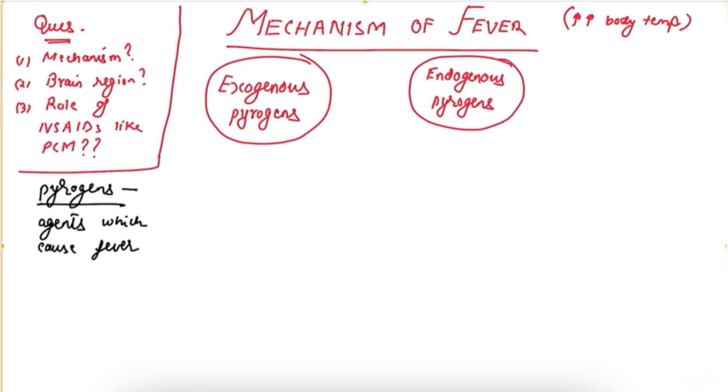Exogenous pyrogens could be bacteria or viruses, like Staphylococcus aureus. Staphylococcus aureus are cocci—they are round bacteria that liberate toxins.